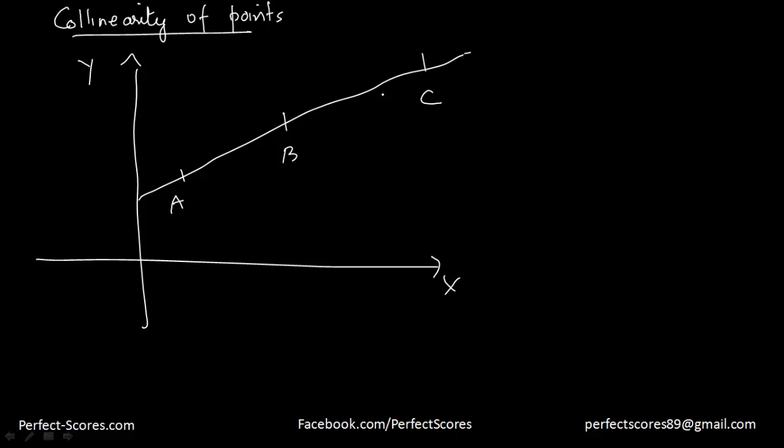Now if these points are collinear to each other, that means they are falling on the same line. So what do you mean by collinear? Collinear means falling on the same line.